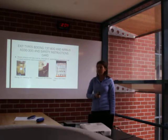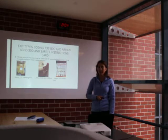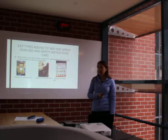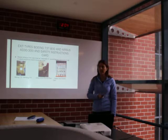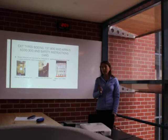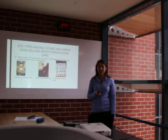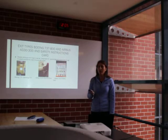The Airbus A330-300 doesn't have oval wing exits — instead it has exit row seats. The Jetstar A320 is the main rival to the Boeing 737 and also has oval wing exits. The main requirements for sitting in an exit row seat are that the passenger must be physically fit, psychologically sound, and also of age.